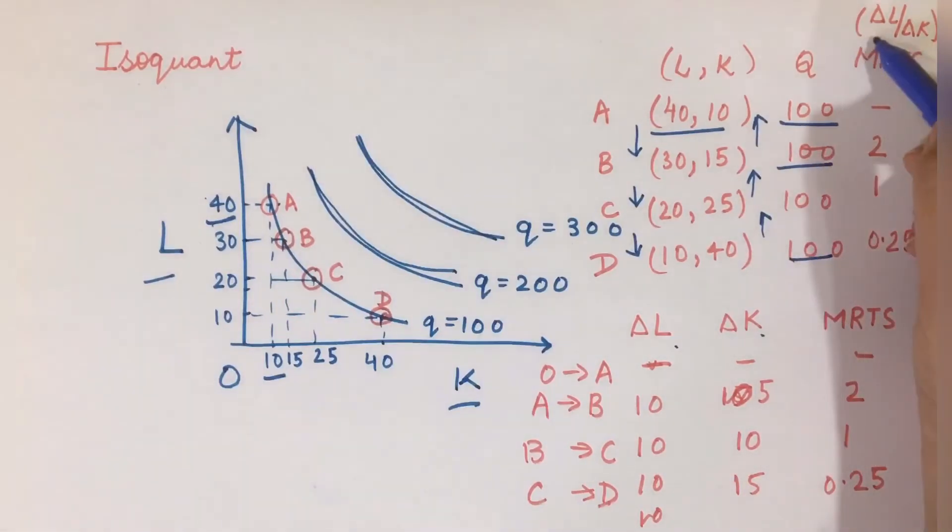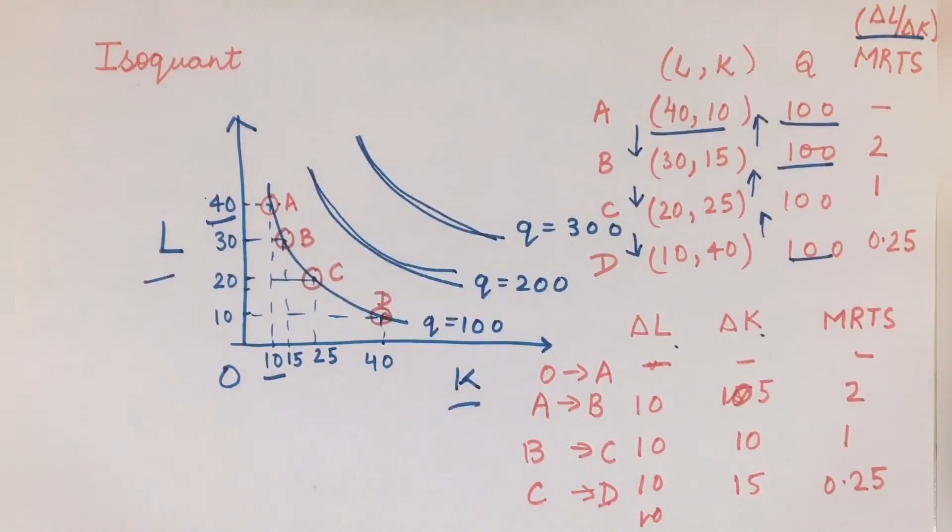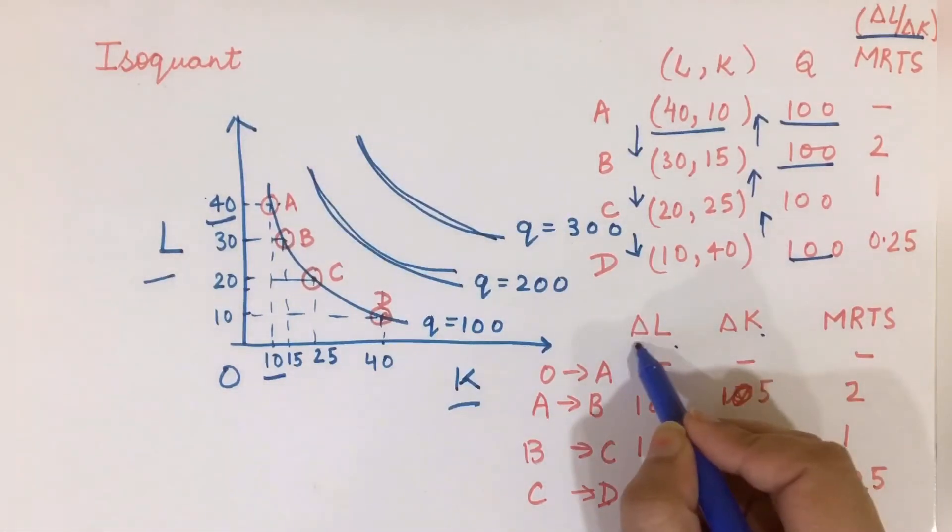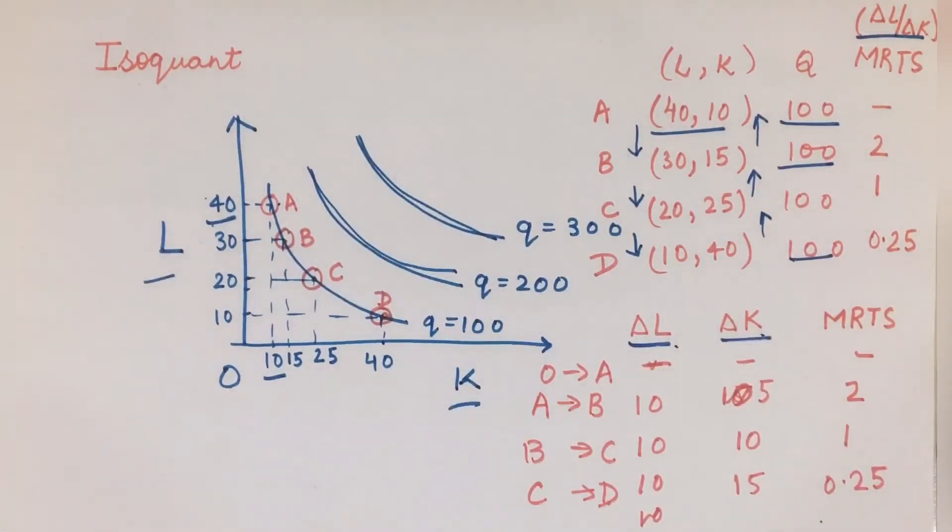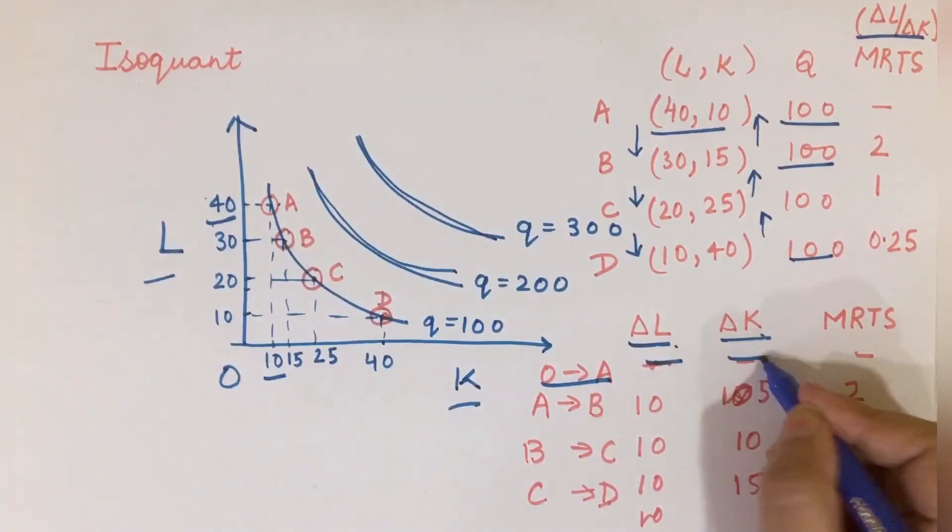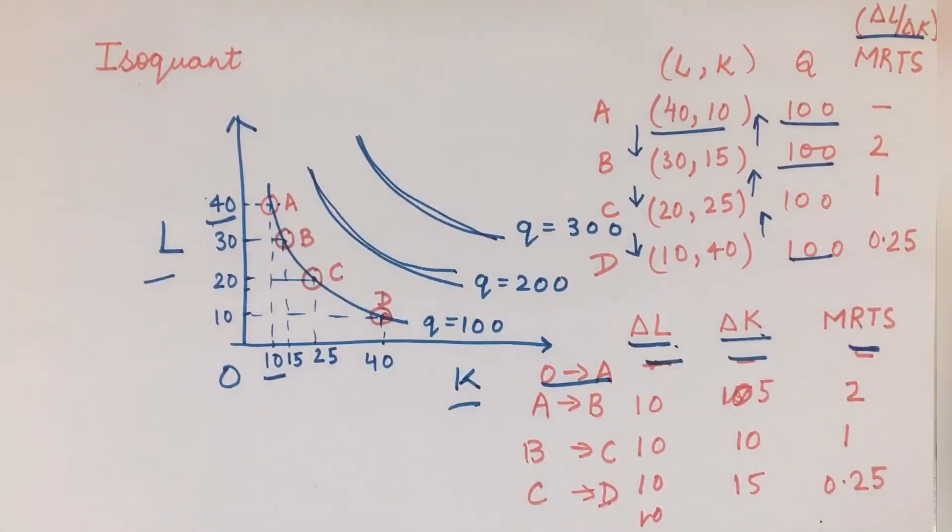To understand MRTS, you can look at the second table given here. For calculating the MRTS, I have calculated ΔL and ΔK as well. When I move from O to A, there is a change in my labor - labor is changing from 0 to 40. For the first point, I would treat it as undefined, so there is no MRTS for point A. For the time being, I am ignoring this.